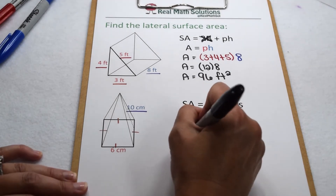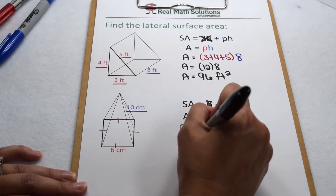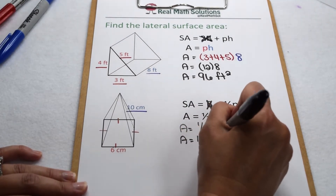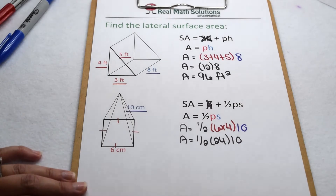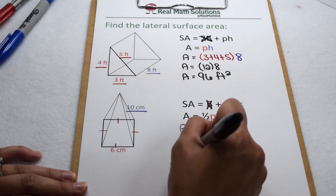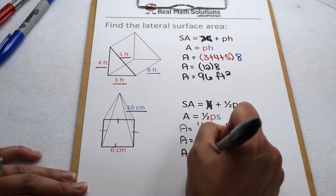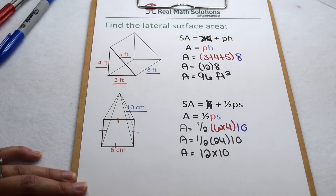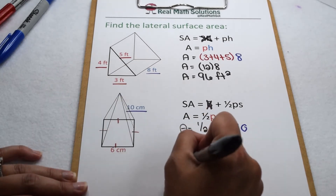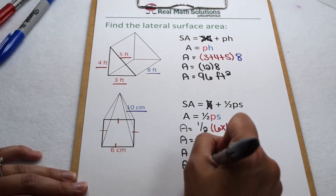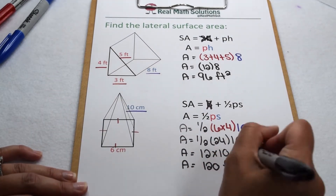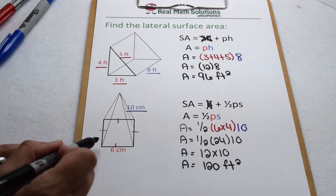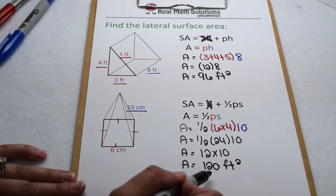Now we can go through and solve. 6 times 4 is 24, so we have one-half times 24 times 10. One-half times 24 gives me 12, then 12 times 10 comes out to be 120. So the lateral surface area for our regular pyramid comes out to be 120 square feet.